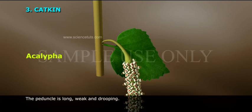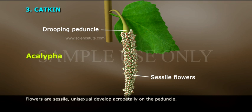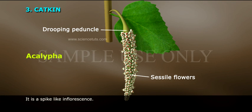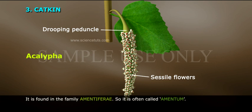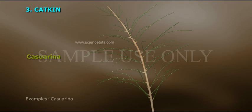Catkin: The peduncle is long, weak and drooping. Flowers are sessile, unisexual, develop acropetally on the peduncle. It is a spike-like inflorescence found in the family Amentiferae, so it is often called amentum. Example: Acalypha.